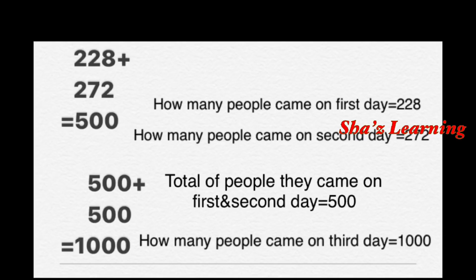We are ready to find out: 228 plus 272. The 1s place: 8 plus 2 is 10. We write 0, carry 1. The 10s place: 2 plus 7 is 9, plus 1 carried is 10. We write 0, carry 1. Using fingers: 3 fingers, then 7 — 5, 8, 9, 10.